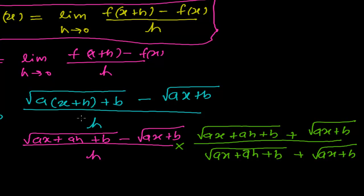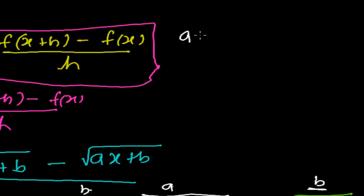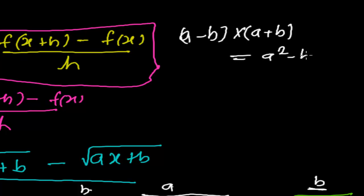The purpose of doing this is: this whole part and this whole part are the same, so we can imagine one as 'a' and the other as 'b'. Here we have minus and here we have plus, so it works as a minus b times a plus b, and the formula for that is a squared minus b squared.